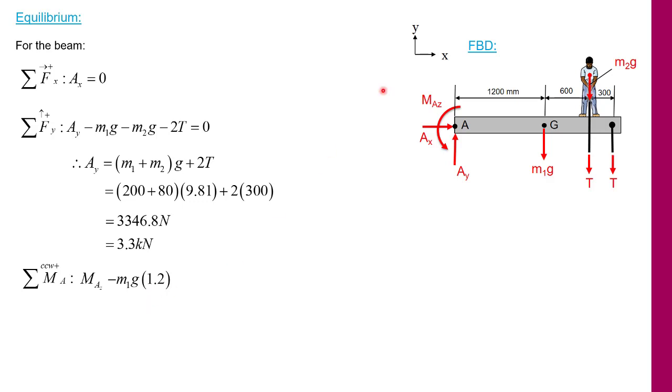Now if I continue to travel along the beam I will hit the person and there is a mass m2 times gravity with a moment arm of 1.2 meters plus 0.6 meters which will be clockwise, thus a negative moment. Then I have the same for T and the same for the second T which is at 1.2 plus 0.6 plus 0.3 meters. Now of course this is an equilibrium equation so all of that has to sum to zero.